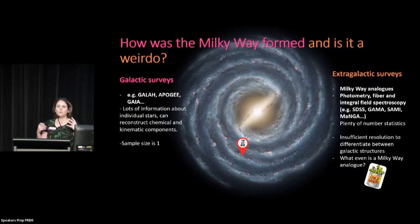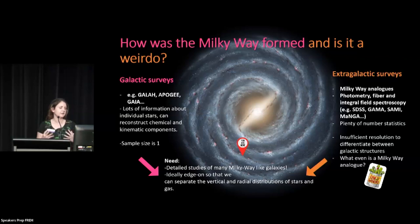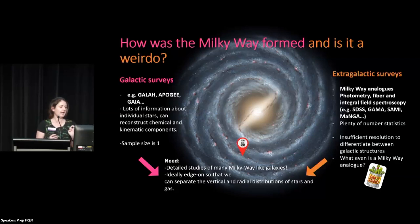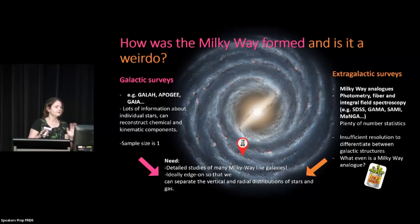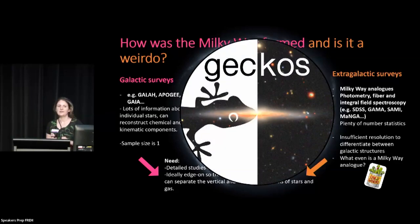So what do we need to move forward? How are we going to make progress on these sorts of questions? In my opinion, what we need is more detailed studies of many Milky Way type galaxies, and if we can go really deep that'd be great too. Ideally these galaxies are going to be edge-on, so we can separate the vertical and the radial distributions of the stars and the gas. And isn't that convenient, because that is exactly what the GECKOS survey is.